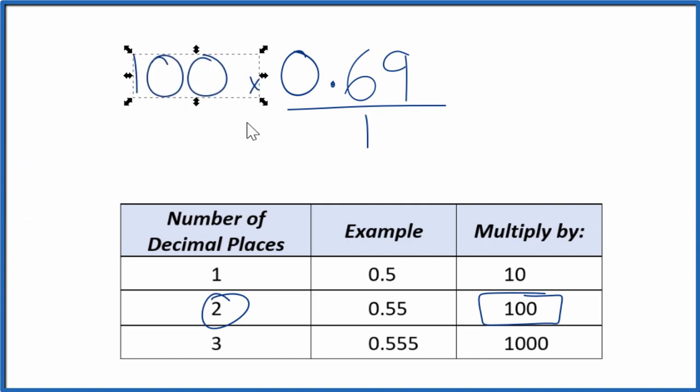So 100 times 0.69 equals 69. And there's our whole number. But we can't just multiply the numerator by 100. We also have to multiply the denominator. That's because 100 divided by 100 equals 1. So we're multiplying by 1. We don't really change the value, just the way it's represented.